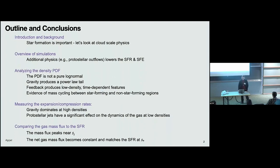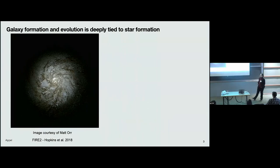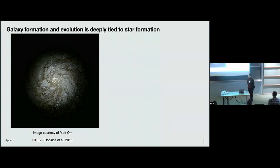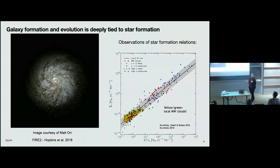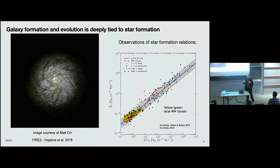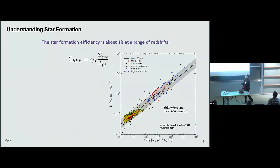Galaxy formation and evolution is deeply tied to star formation, so understanding how it proceeds is very important. We have really good observations of star formation relations — this is a variation on the Kennicutt-Schmidt relation, where we have the star formation rate surface density as a function of gas mass surface density normalized by the free-fall time. For observations ranging from local Milky Way clouds to high-redshift disc and starburst galaxies, they all follow this same relation. We see an observed star formation efficiency of about 1% at all redshifts — only about 1% of gas is actually converted into stars — and I would really like to understand what is controlling that.